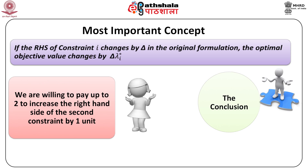The value lambda i star is thus the marginal value of the resource associated with constraint i. For example, the optimal objective value, currently 22, would increase by 2 if we could increase the right-hand side of the second constraint by delta equal to 1. Thus, the marginal value of that resource is 2 — we are willing to pay up to 2 to increase the right-hand side of the second constraint by 1 unit. The conclusion is that changing the right-hand side of a constraint is identical to setting the corresponding slack variable to some value, giving us the shadow price which equals the reduced cost for the corresponding slack, and the ranges.